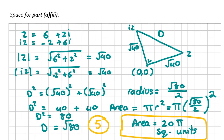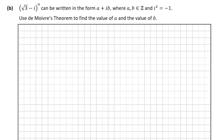Now let's move on to question B. We're given the complex number root 3 minus i to the power of 9, and we're told it can be written in the form a plus ib. We're asked to use De Moivre's theorem to find the values of a and b. The first step is to write root 3 minus i in polar form.